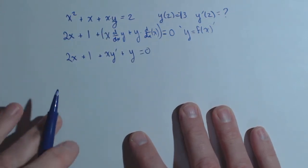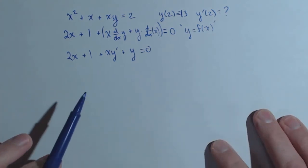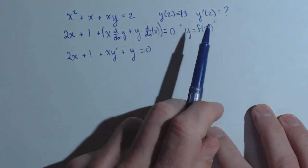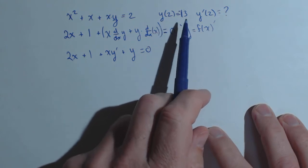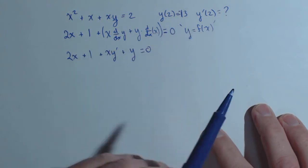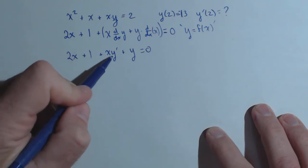Now at this point we have two options. We could solve for y prime, or because we're looking for the slope at 2, we can plug in 2 and negative 13 for x and y and solve. Let's do the more general and solve for y prime.